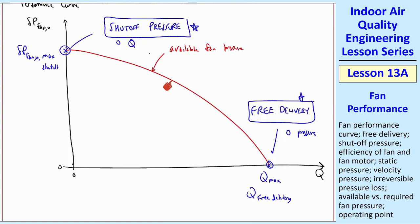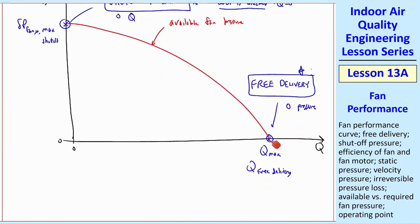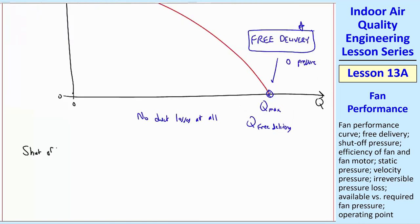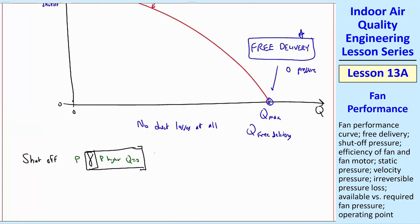Anywhere in between follows that curve. The shutoff pressure occurs when the duct is completely blocked, so you cannot get any flow — it forces Q to be zero. At shutoff, the fan is spinning but there's no flow, so it's not doing any useful work, and the efficiency of the fan is zero.